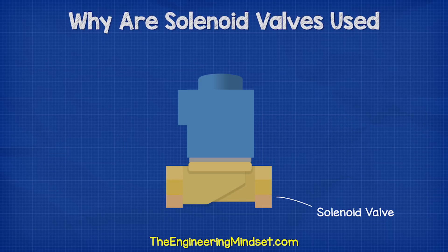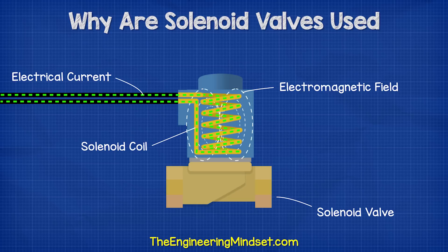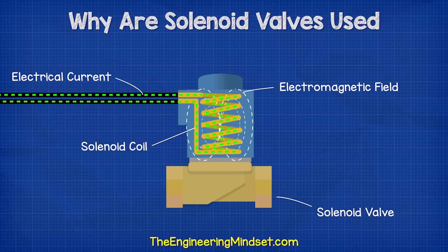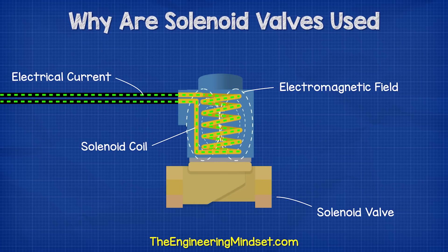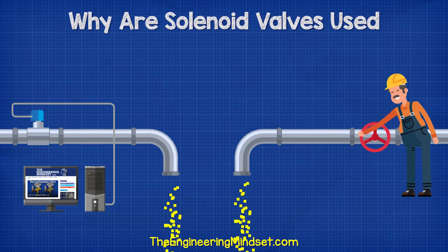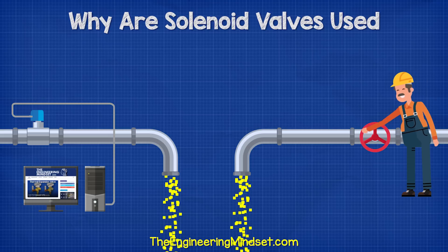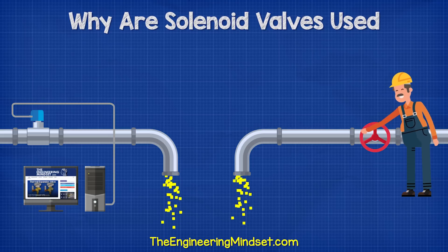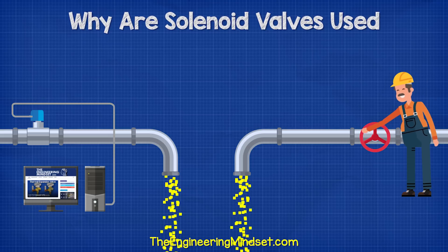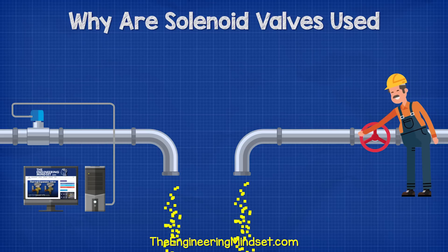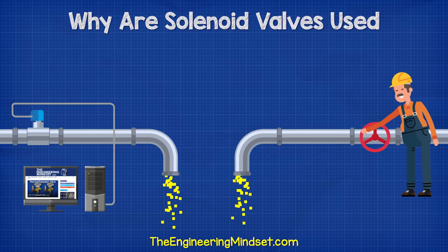The solenoid coil on the top is used to operate the valve by passing an electrical current through it to create an electromagnetic field and operate the valve. This means if it is connected to a controller, it can be operated autonomously and remotely by a computer without the need for engineers to physically run around opening and closing valves. This allows systems to run much more efficiently and safely.